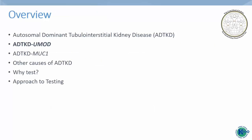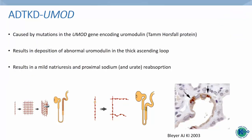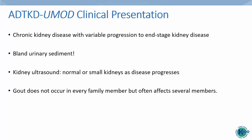ADTKD UMOD is the most common form of ADTKD. This condition is caused by mutations in the UMOD gene encoding uromodulin, also known as Tamm-Horsfall protein. Tamm-Horsfall protein is secreted only in the thick ascending limb of Henle, where it forms a polymer that enhances sodium reabsorption and helps protect from kidney stones and urinary tract infections. When patients have a mutation in UMOD, the protein cannot form correctly, the polymer does not form, and the mutated UMOD protein deposits in the thick ascending limb cells.